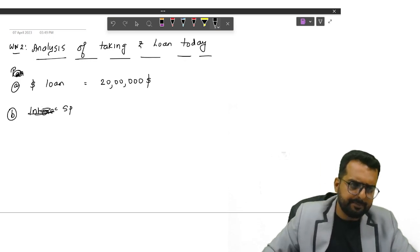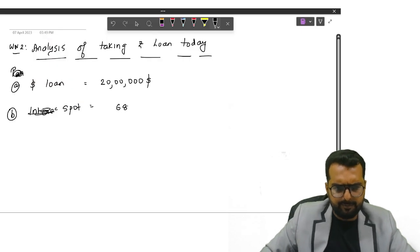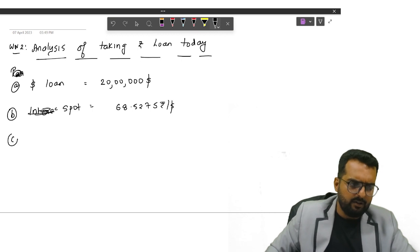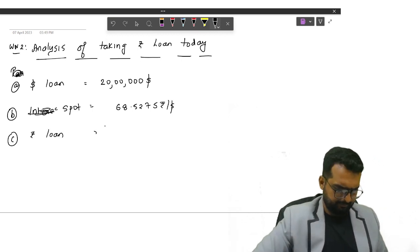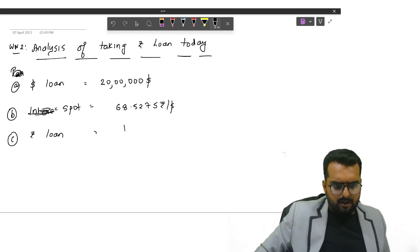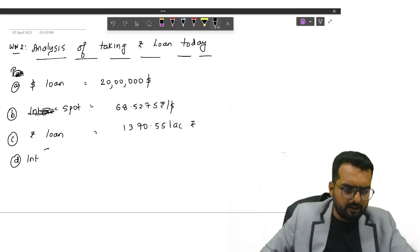So what is the spot rate that I have over here? Is it 68.5275? Fine. So tell me how much will be my rupee loan if I convert?